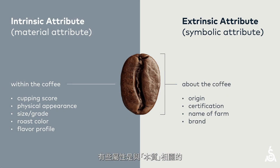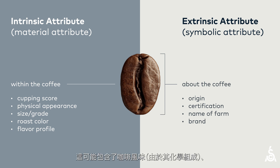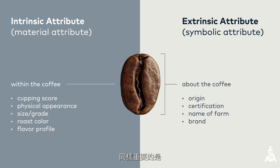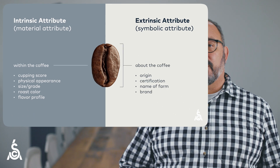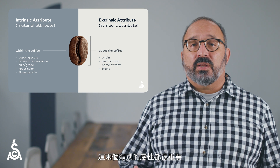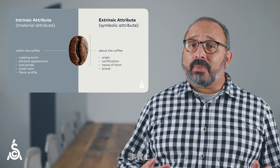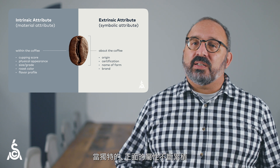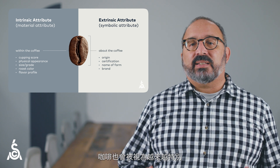Understanding attributes is key to understanding the value of a coffee. Since these attributes differ, we can take another step in organizing them. Some attributes are intrinsic to the coffee and are a part of their material reality — this would include the flavor of the coffee due to its chemical makeup, its physical properties, grade, etc. But also important are the extrinsic attributes, which are usually information about the coffee, things like its country of origin, brand, or sustainability certification. Both categories of attribute are important, and both add value to the coffee. And in fact, as distinctive positive attributes accumulate, the coffee can be seen as getting more and more special.